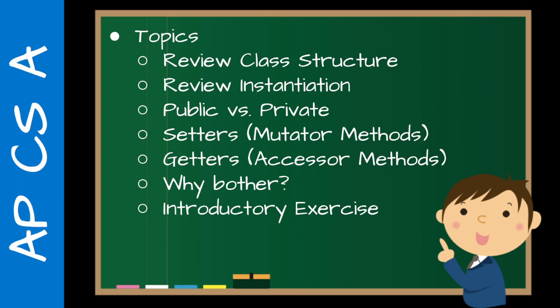This is where we switch from using public attributes to private attributes. And if they're private, that means we can't access them outside of that class, so we need to use mutator methods, which are called setters, and accessor methods, which are called getters. And then, of course, the perennial question students will give you is, well, why? We'll talk about some reasons why you might want to do it this way rather than just doing what is kind of the easier way, which is making everything public. And then a little bit of an introductory exercise, similar to some of the stuff that we've done previously.